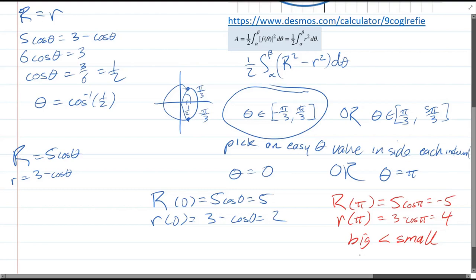Which is what we don't want. So we're not using that interval. Now you can compute because you have alpha and beta, your beginning and ending theta values.